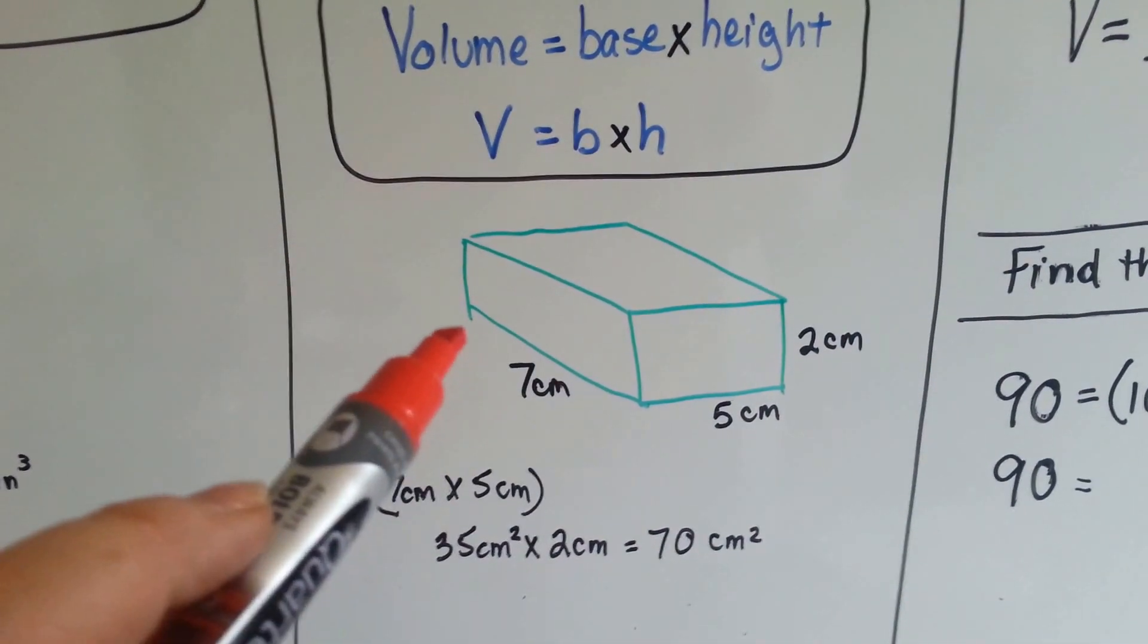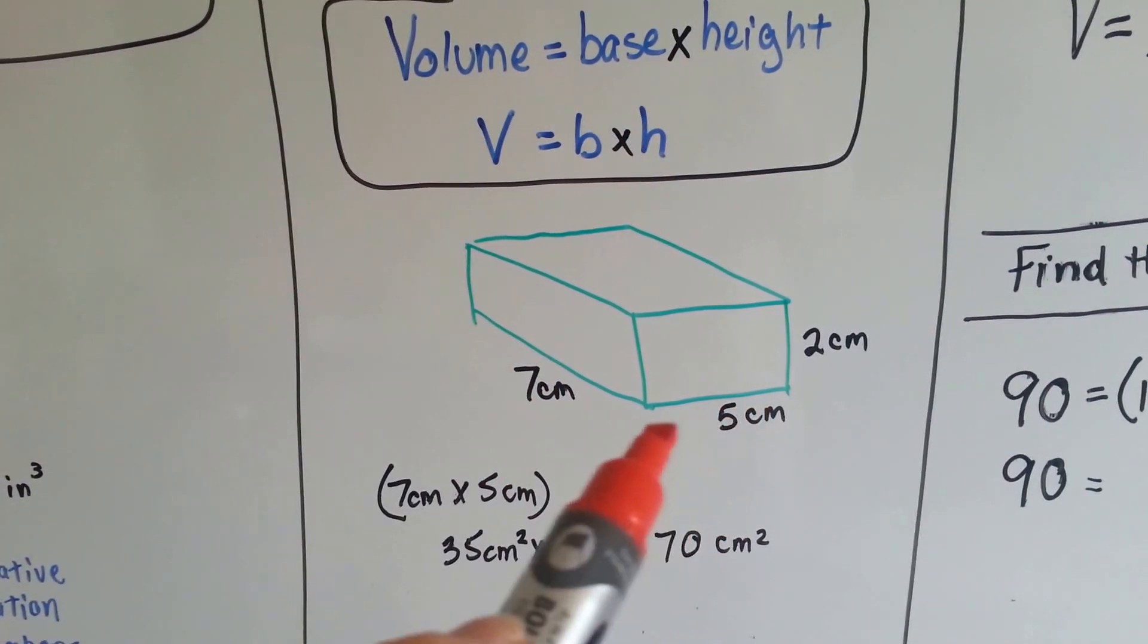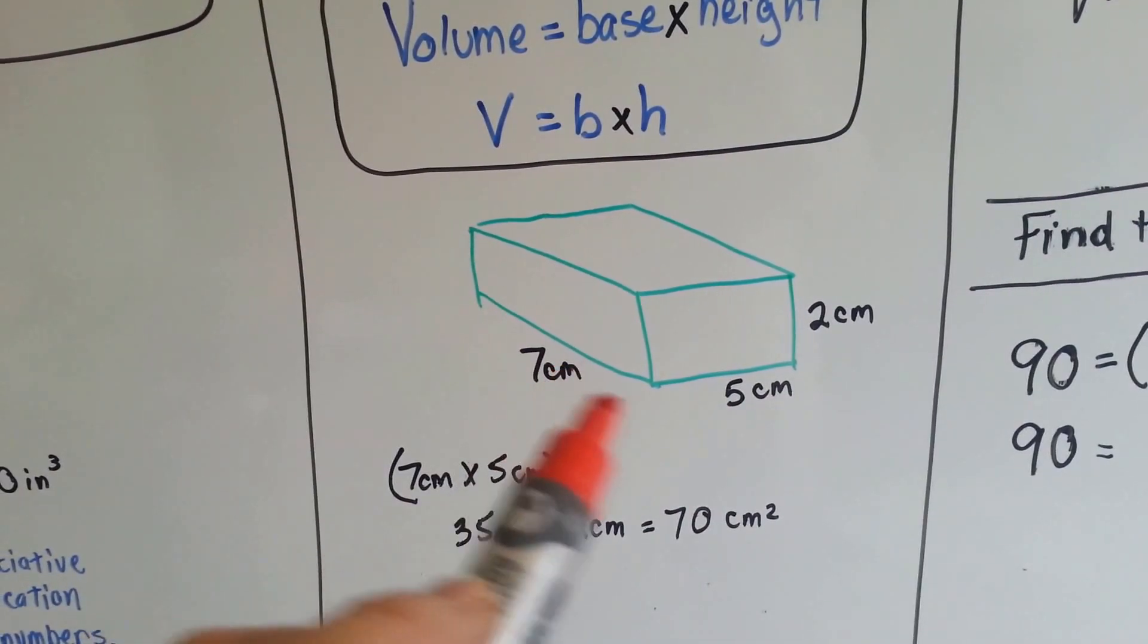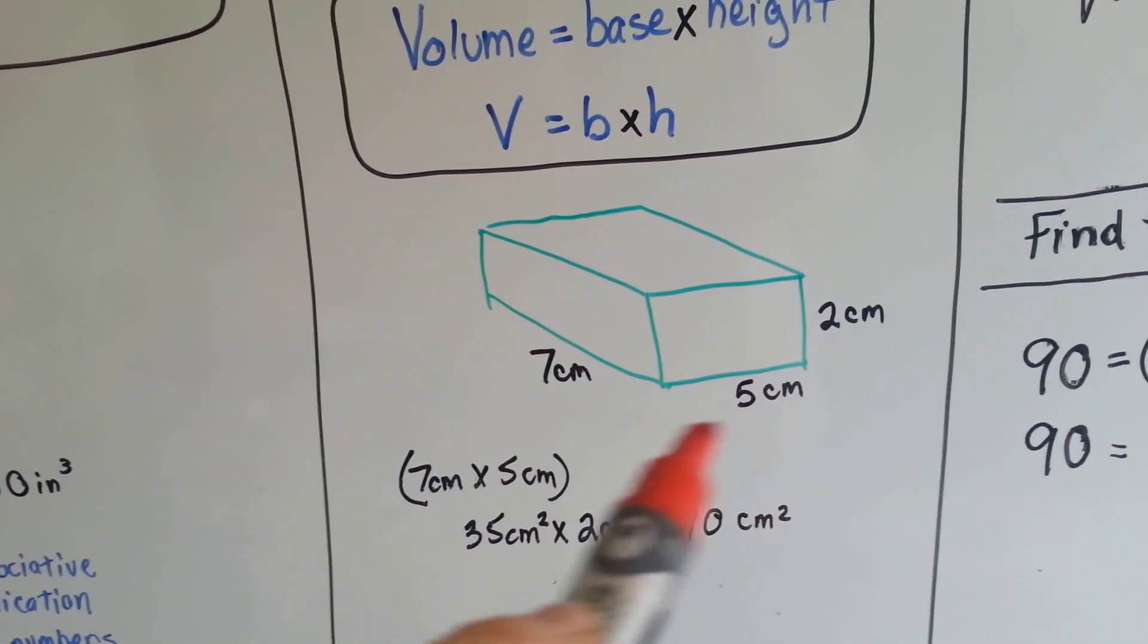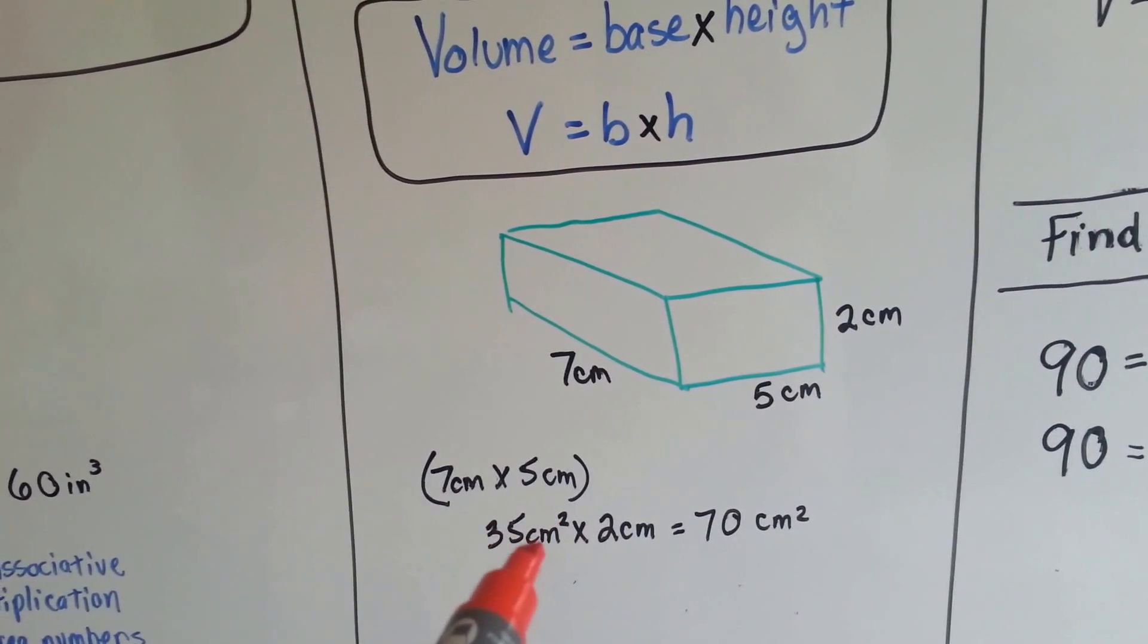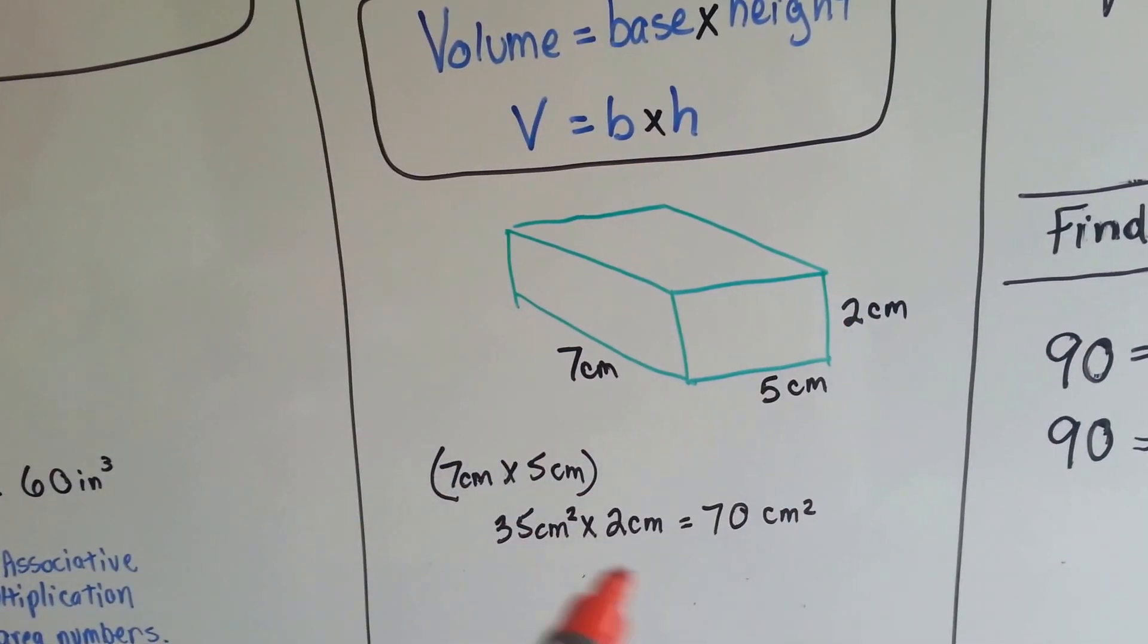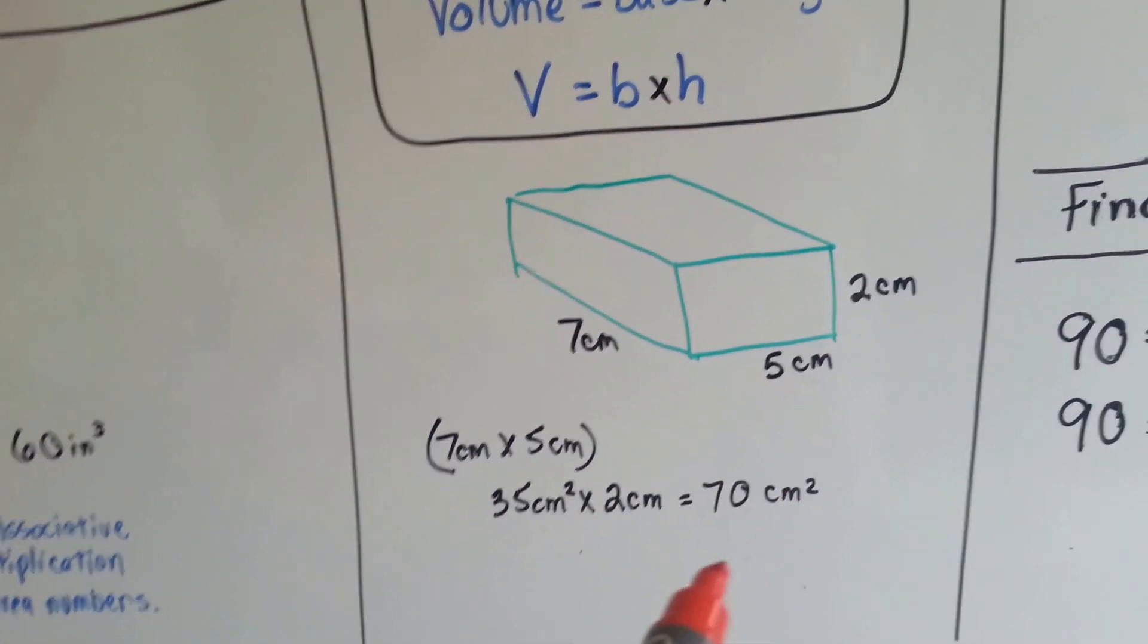If we had this green box that was 7 centimeters long for the length, 5 centimeters for the width, and 2 centimeters for the height, we could do the 7 times 5, which is 35. That gives us centimeters squared. It's 35 centimeters squared because we found the area. And then we'd multiply that by the 2, the height. And we'd get 35 times 2, which is 70 centimeters cubed.